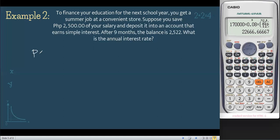In our previous slides, we discussed there are two formulas—one for interest and one for future value. Before we decide which formula to use, let's first write down all of the givens. We have the principal amount, 2,500. We also have the future value of 2,522, and the time, 9 months. Since it's in months, we convert to years: 9 over 12, or simply 3 fourths.